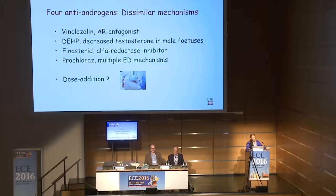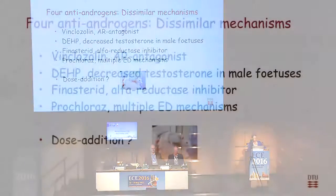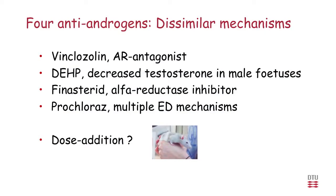We then extended the work to look at anti-androgens with dissimilar mechanisms of action. We chose: vinclozolin, an AR antagonist from the first study; DBP, a phthalate that causes decreased testosterone in male fetuses; finasteride, a 5-alpha-reductase inhibitor; and prochloraz, a pesticide with all of these mechanisms to some extent. The big question was: would we see a mixture effect when the substances have different mechanisms of action, and could it be predicted by dose addition?